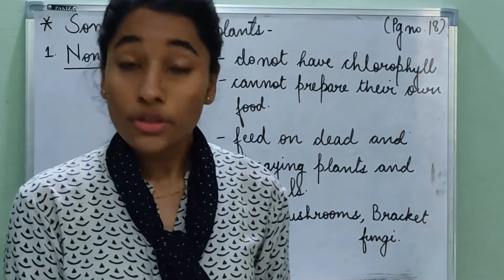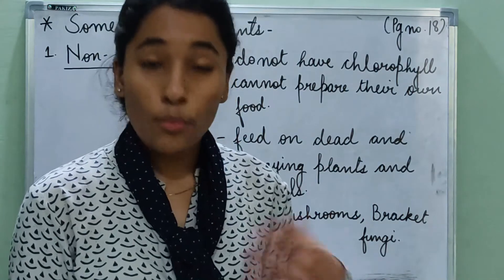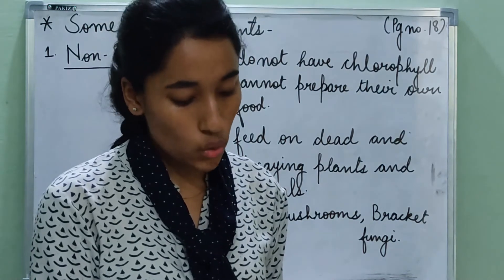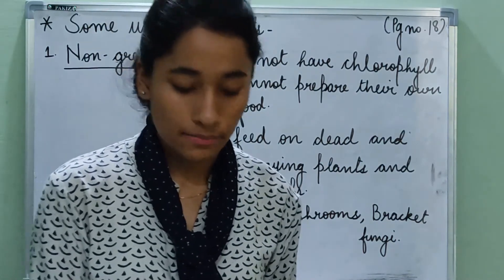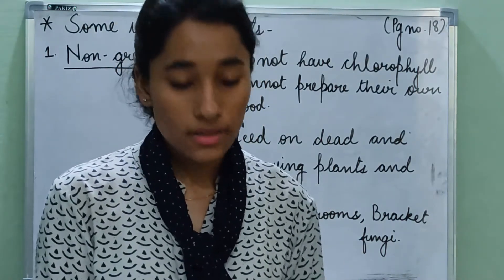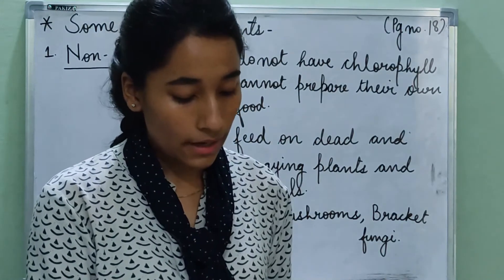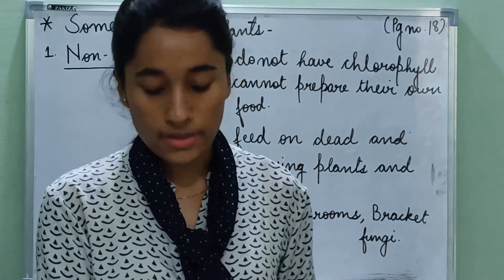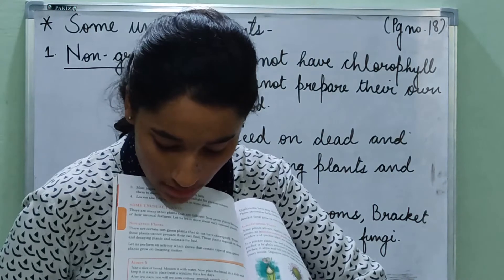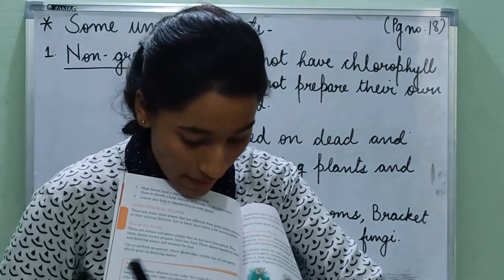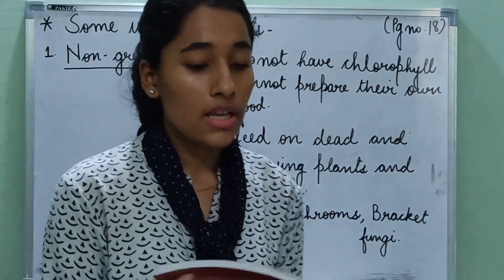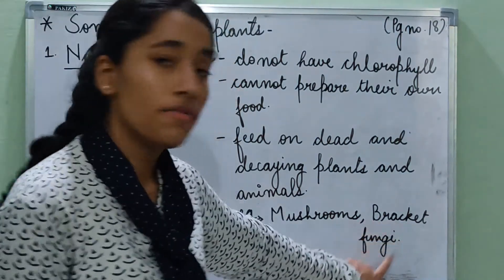From where do these non-green plants get food? They get or absorb food from other sources such as soil and green plants. Mushrooms and bracket fungi are some examples of non-green plants commonly found around us. Mushroom absorbs food from the soil, and bracket fungi gets food from the tree branches.